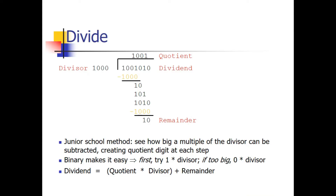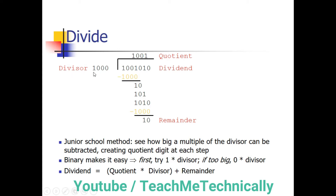Basically what's going on here is we have a divisor, a dividend, a remainder, and a quotient. The dividend is the number which we want to divide, and the divisor is the number by which we want to divide the dividend. The result we get after division is the quotient, and the remaining part is the remainder. Here we are simply performing binary division.